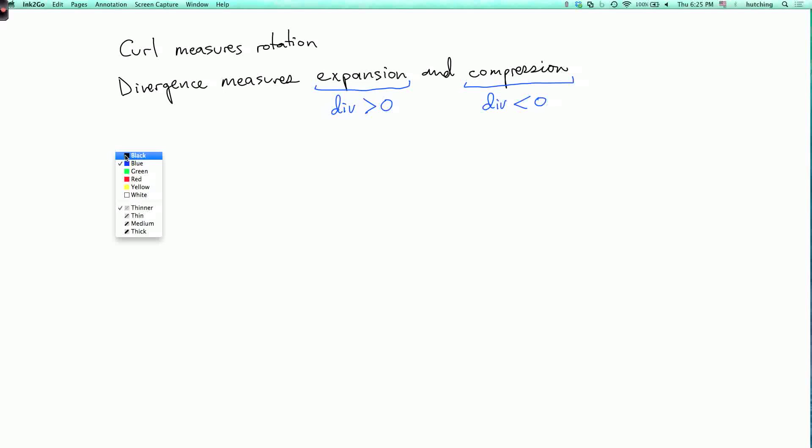So for example, suppose F is the velocity vector of the air in the room, or air in some space. Now, if it's not getting compressed, so if the pressure is staying the same everywhere, then the divergence will be zero.